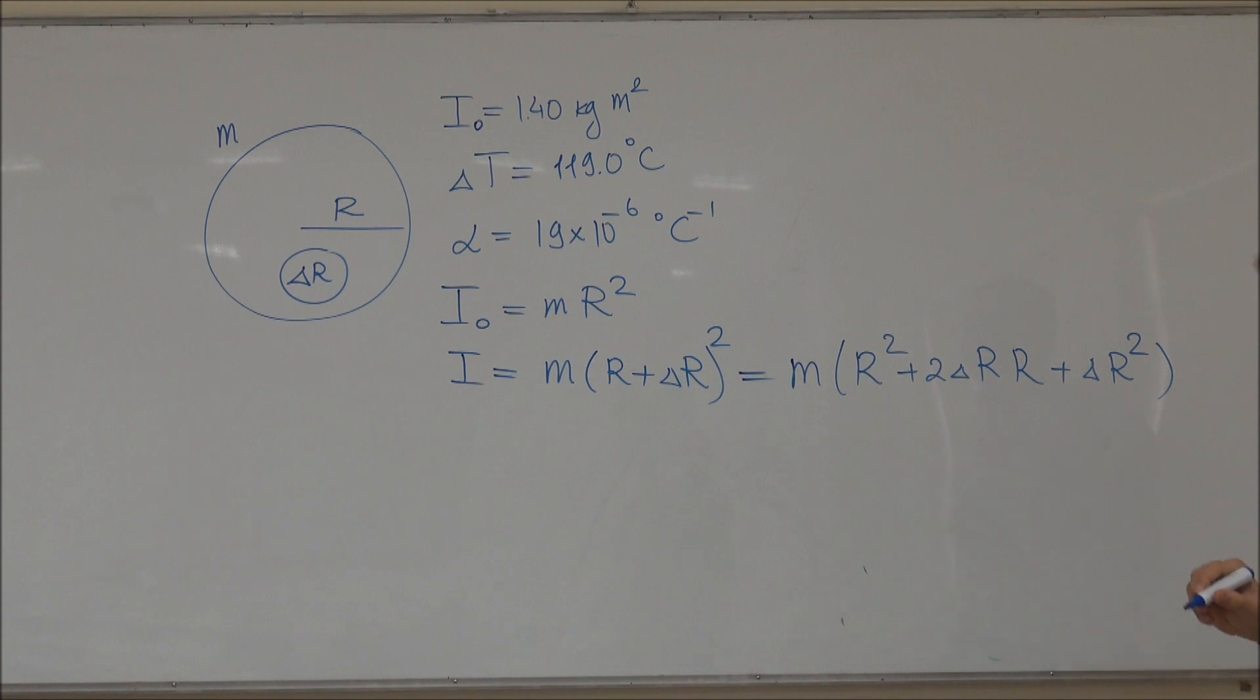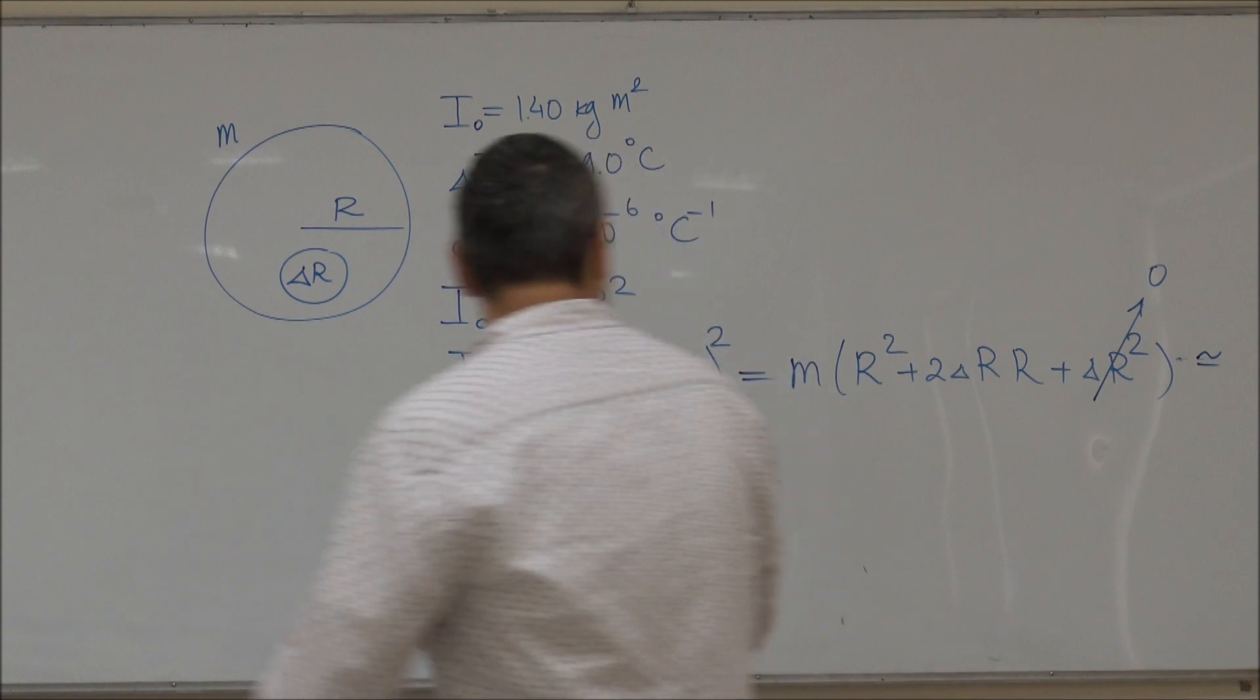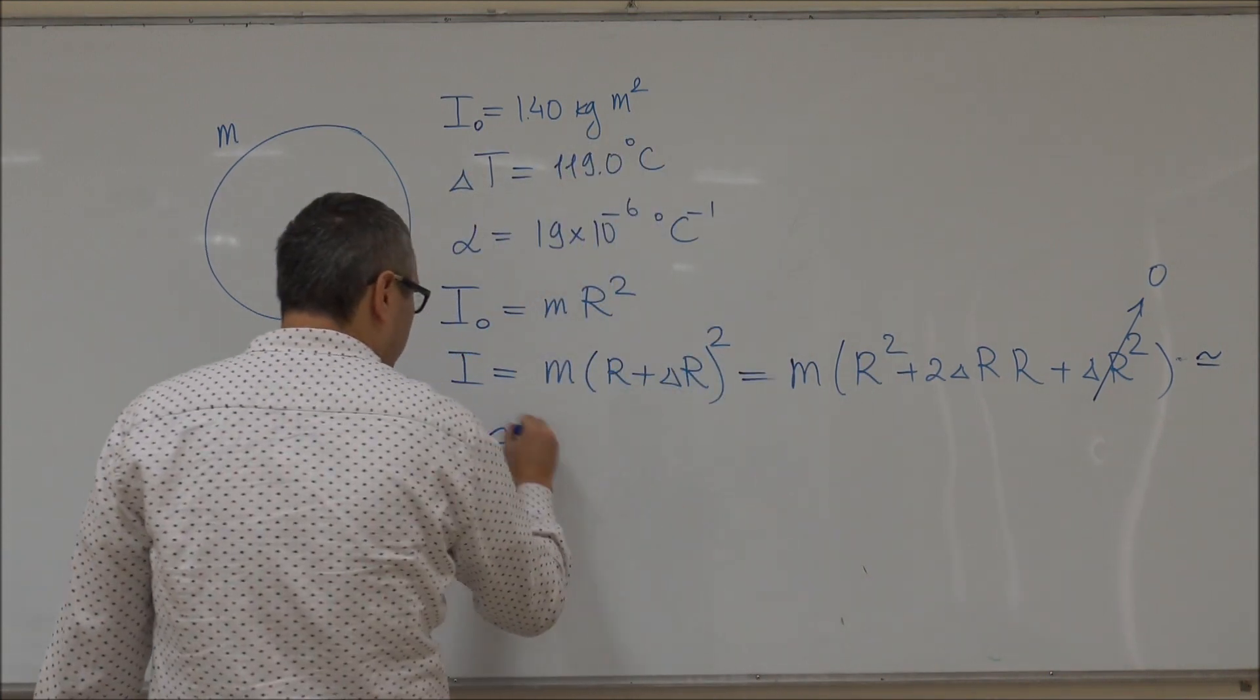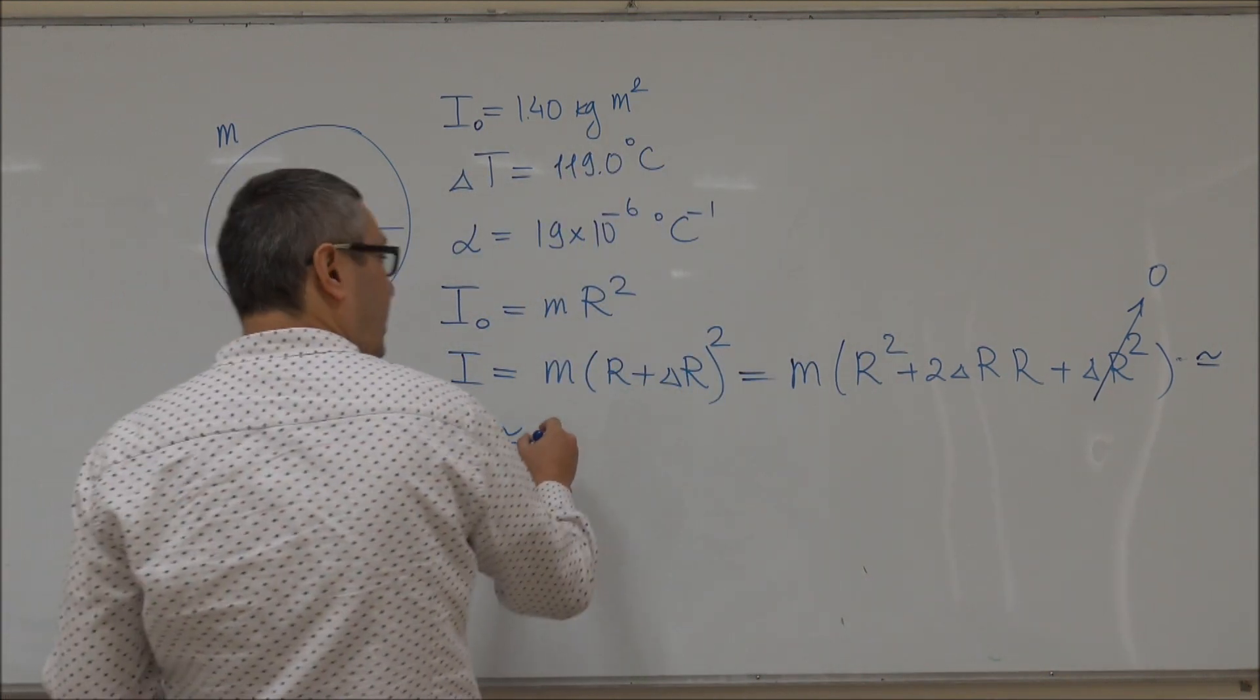Now this ΔR² is a second order term, so it can actually be neglected. Okay, so ΔR² we take as zero.